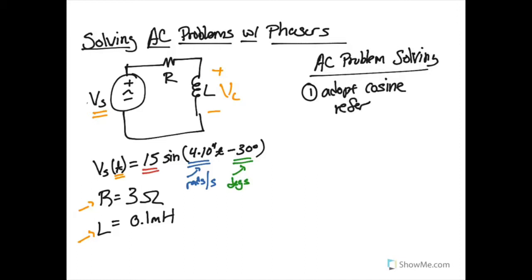So what that means is that for all of our sources, regardless of how it's written, we're going to change the trigonometric function into a cosine function. This particular example is written as a sine, so we'll need to change it to cosine. If it's already in a cosine, then there's nothing we need to do.